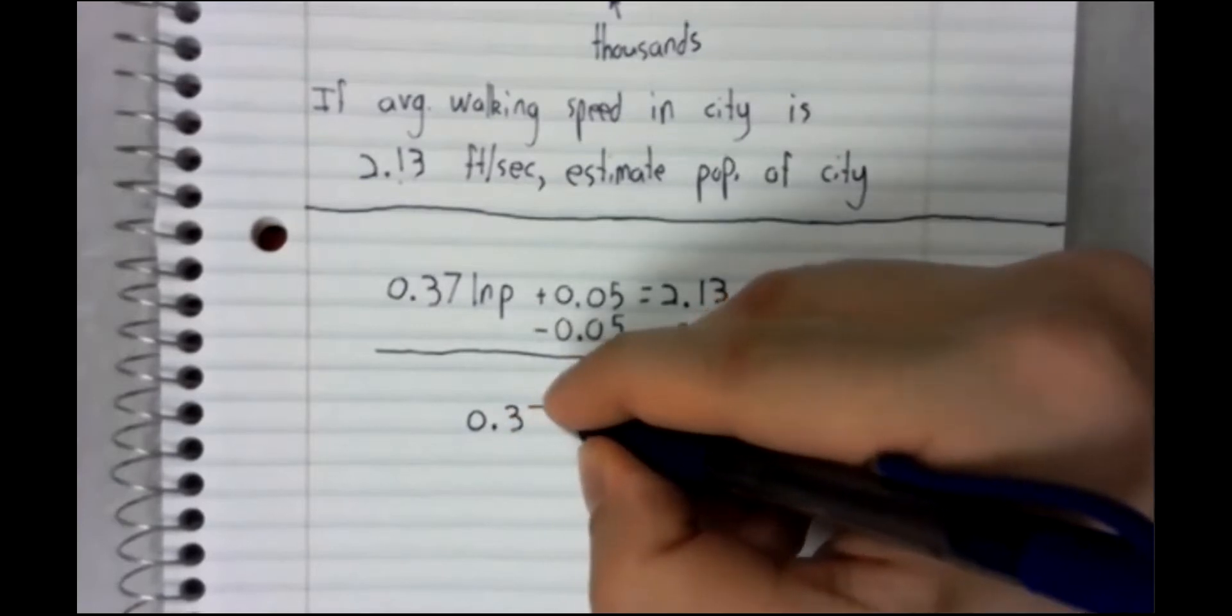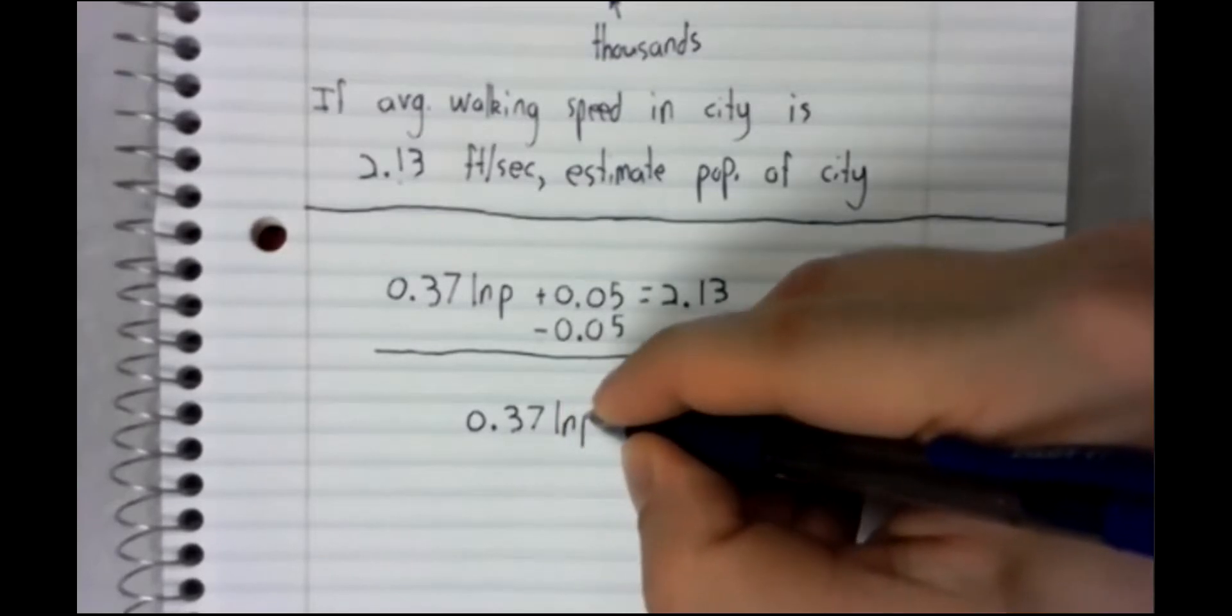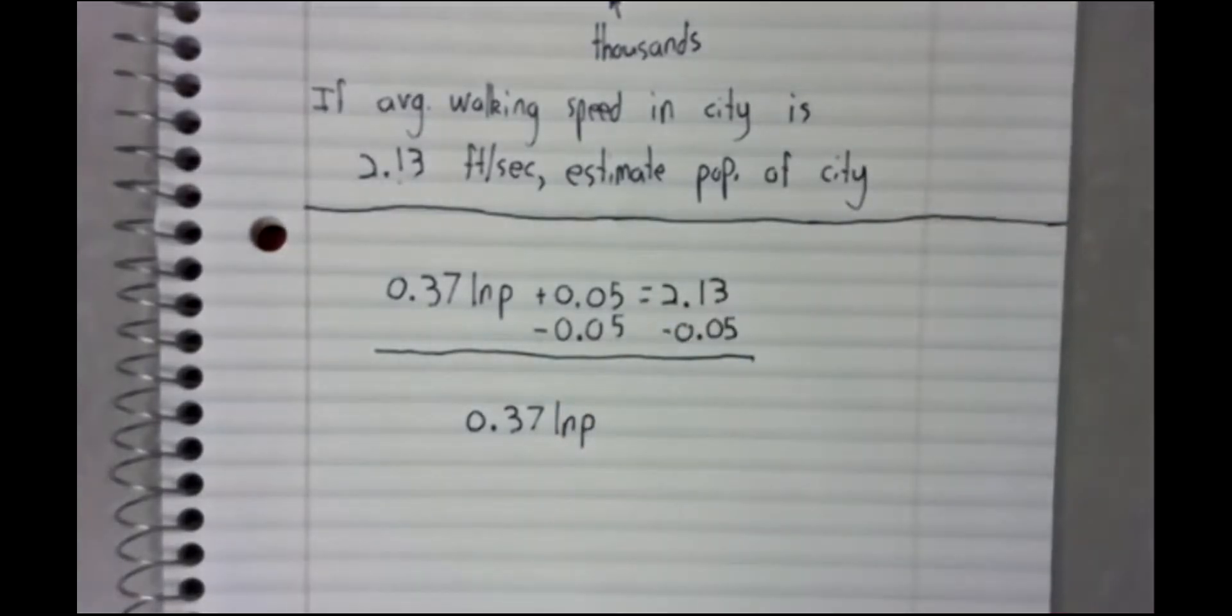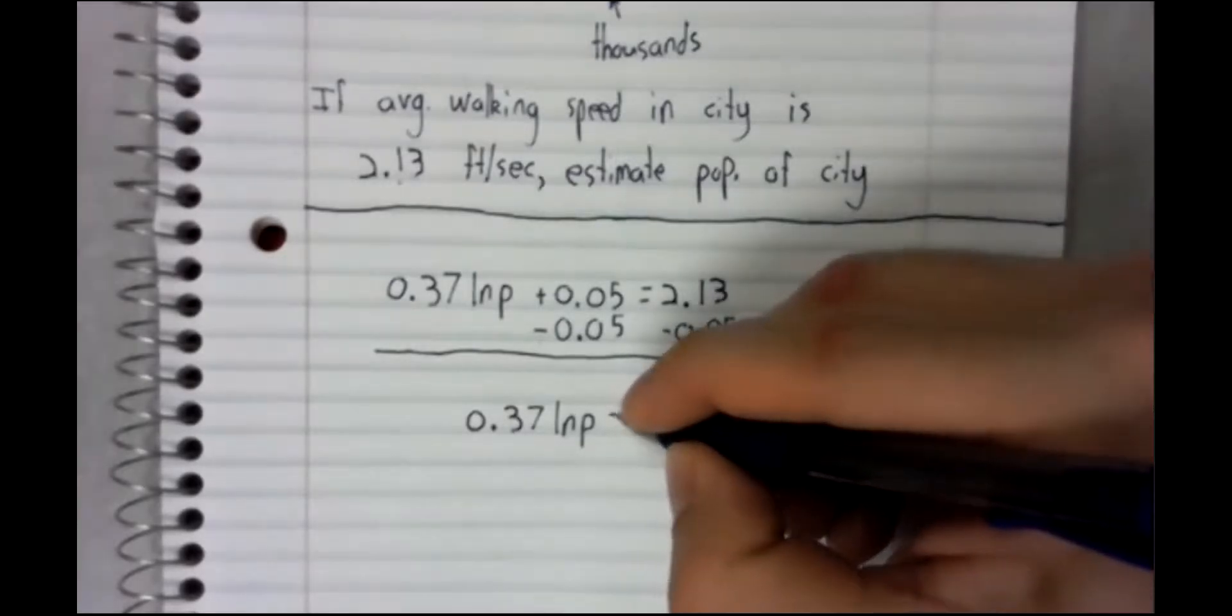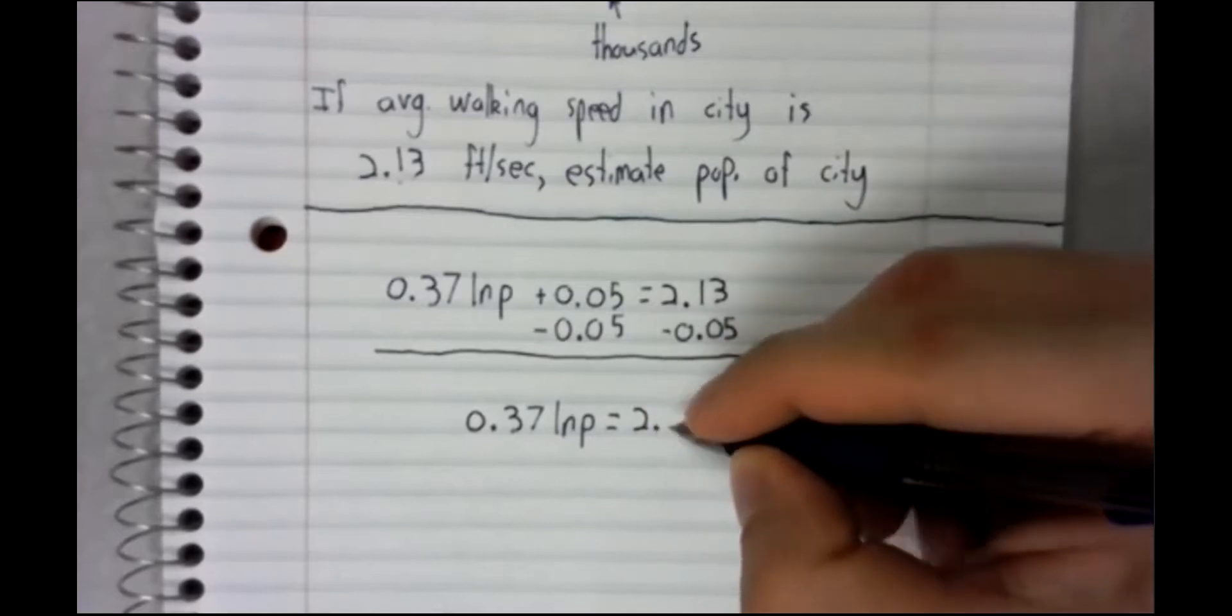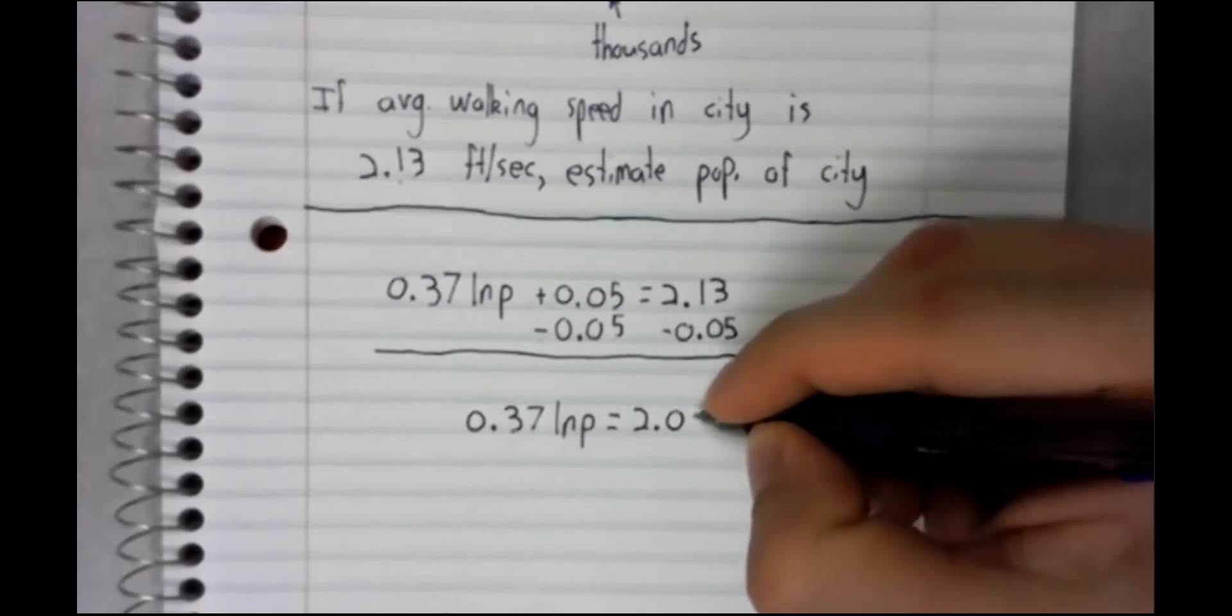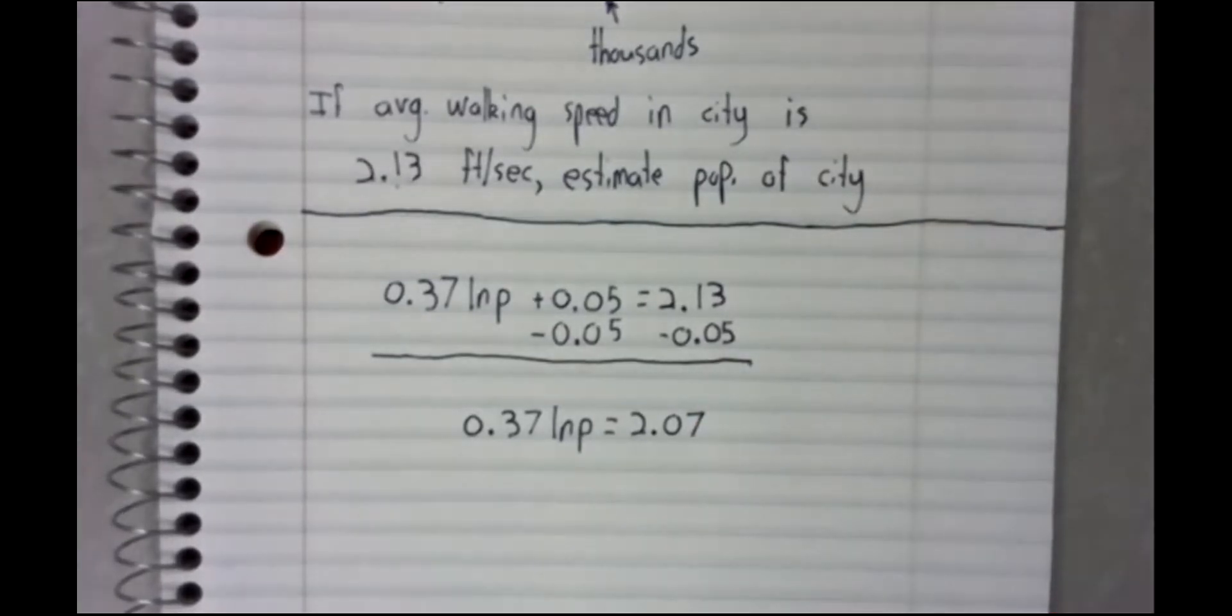0.37 times the natural logarithm of P equals 2.13 minus 0.05. We are still not ready to solve this.